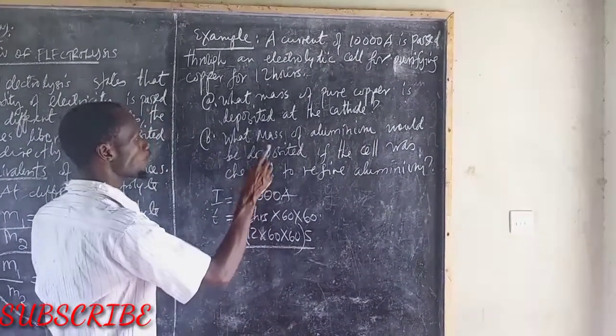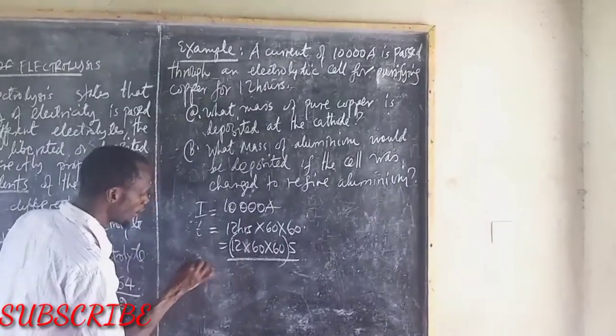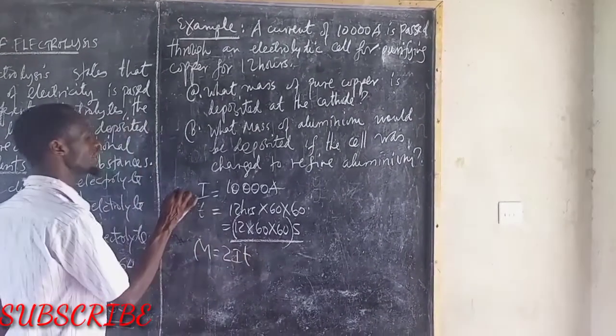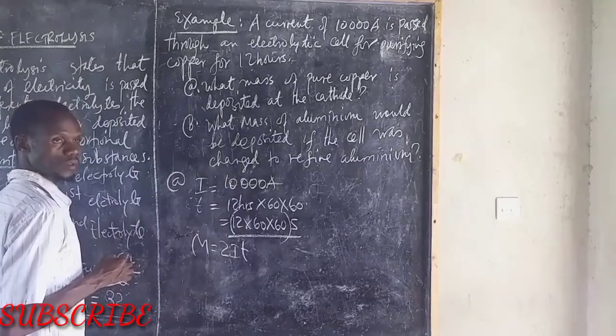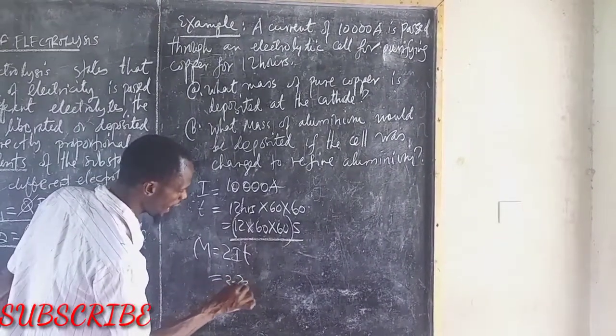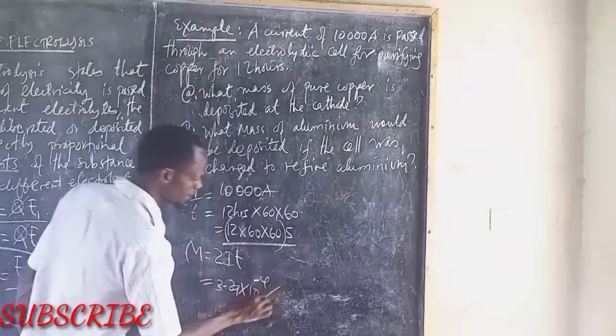Because we are just talking about only copper, we use mass is equal to Zit. Therefore, Z is 3.29 times 10 power negative 4, that is copper.